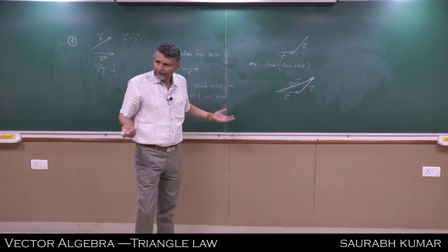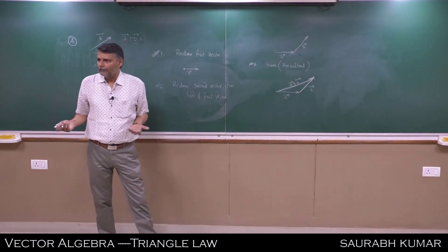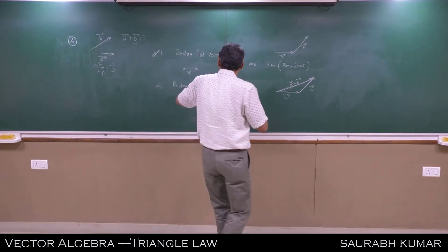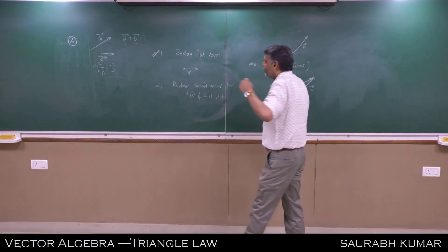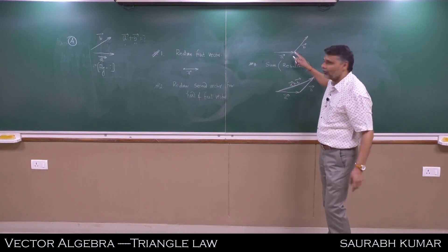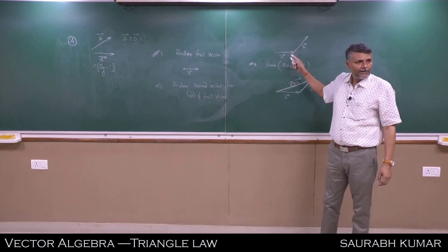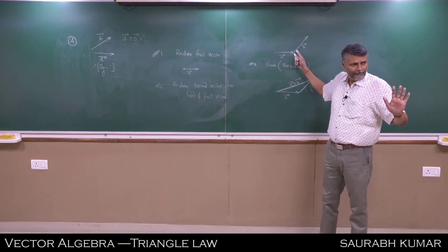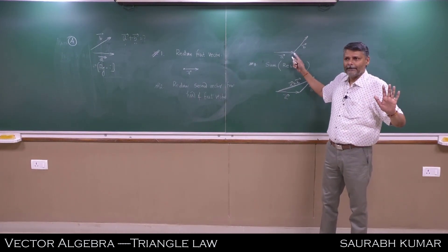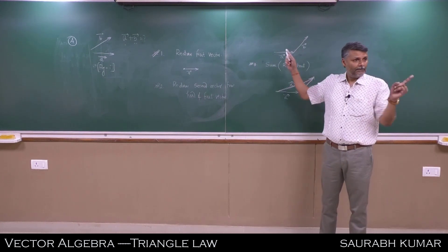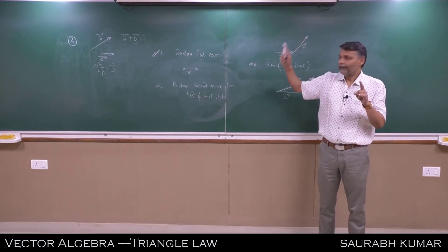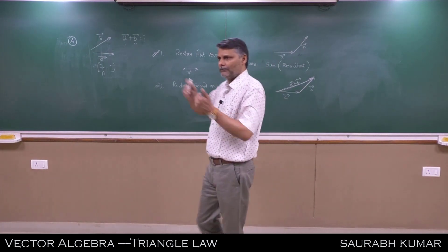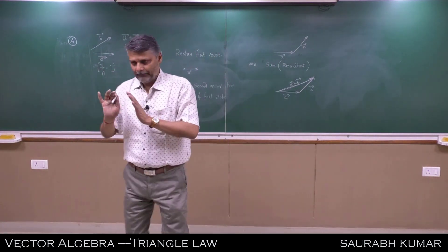So you will never have to learn this again. The most important idea here: the head of the first vector and the tail of the second vector should coincide, and the resultant goes from the tail of the first to the head of the second.